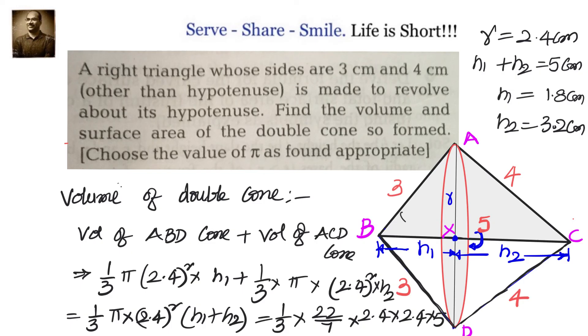We will have 2.4 × 5/3 × 22/7. After simplification we will have approximately 30.17 cm³. So we calculated the volume and surface area of the double cone so formed.